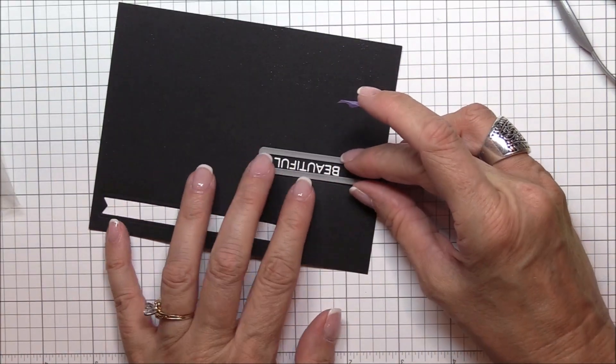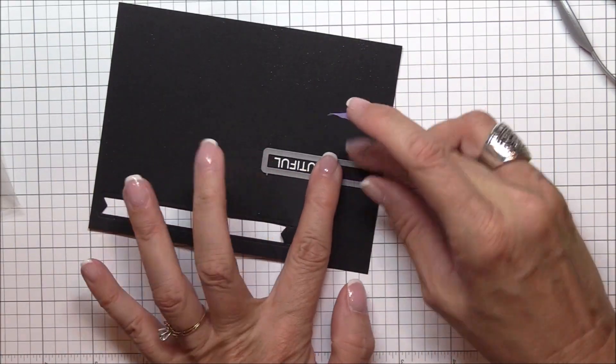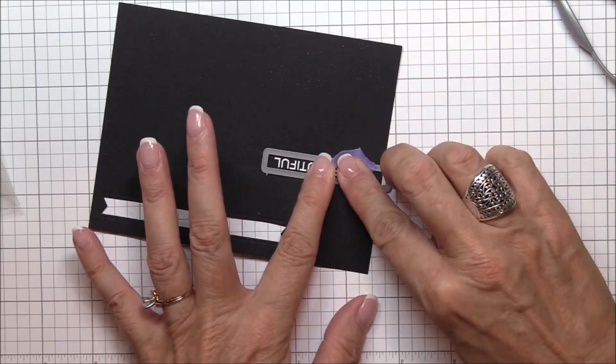To customize the size of the strip, I'll use the partial die cutting technique to cut away the excess cardstock around the stamped image.